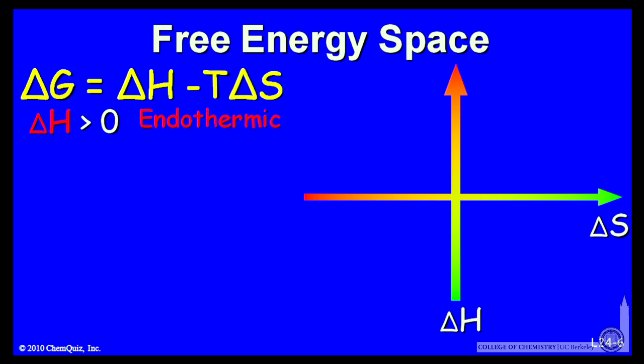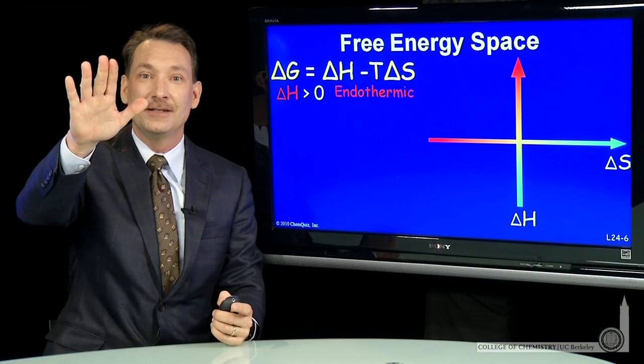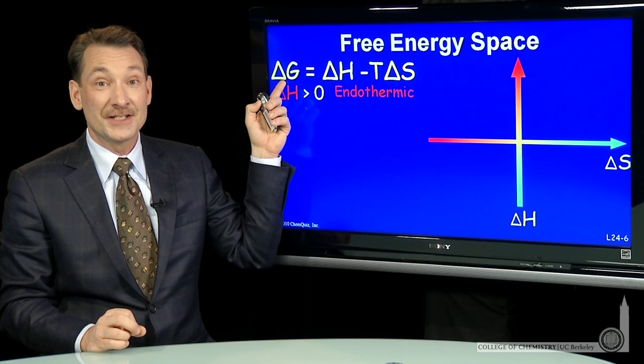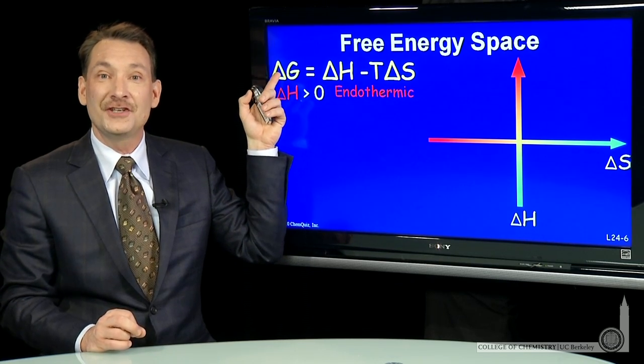What if delta H is positive? That is, an endothermic reaction. That's going up enthalpy hill. And indeed, that doesn't favor it being a spontaneous reaction, because a positive delta H tends to make delta G positive.